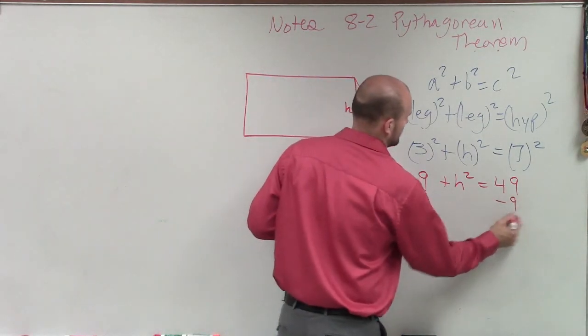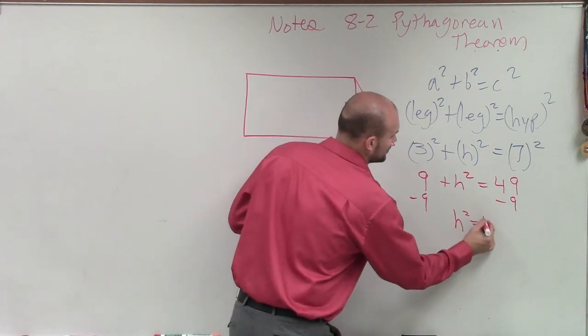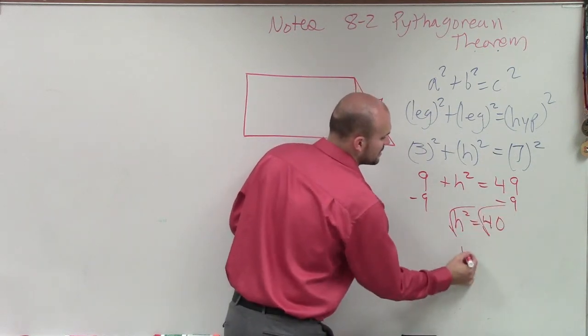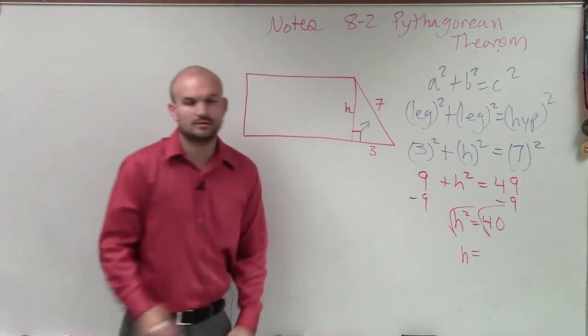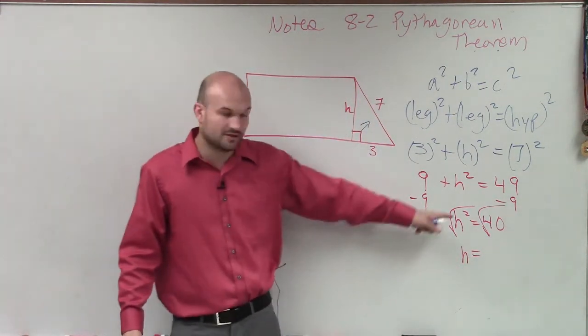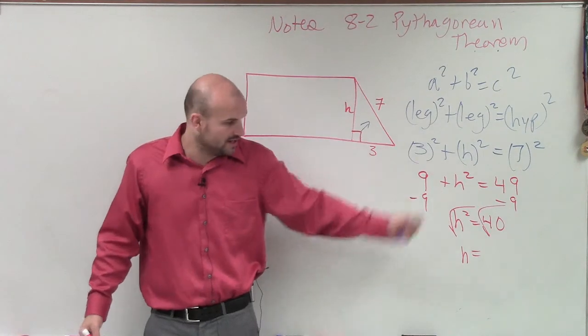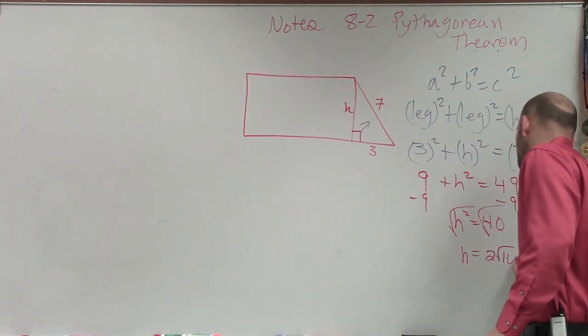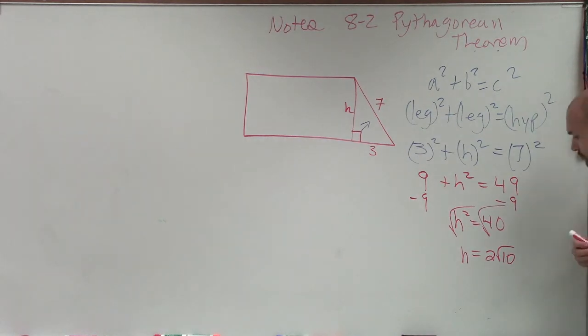Subtract 9. H squared equals 40. Then I take the square root of both sides. H is going to equal, in this case, if I was going to simplify, you could either use a calculator and figure it out. Or the simplified version would be 2 square root of 10.